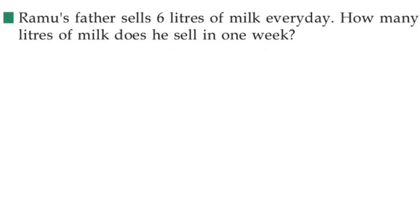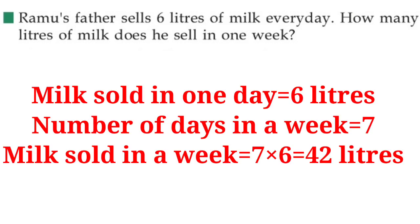Ramo's father sells six liters of milk every day. How many liters of milk does he sell in one week? Milk sold in one day is six liters. Number of days in a week is seven days. So milk sold in a week is seven times six, which is equal to 42 liters.